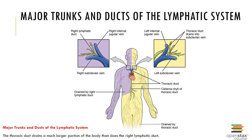Superficial and deep lymph-collecting vessels converge to form larger vessels known as lymphatic trunks, which are named by the areas of the body they drain. The jugular trunks are located in the neck and drain the head. The subclavian trunks are located in the shoulders and drain the arms. The broncho-mediastinal trunks are located in the chest and drain the thoracic cavity and lungs. The lumbar trunks are located in the lower back and drain the pelvis and lower limbs. The intestinal trunk is located in the abdomen and drains the wall of the digestive organs.